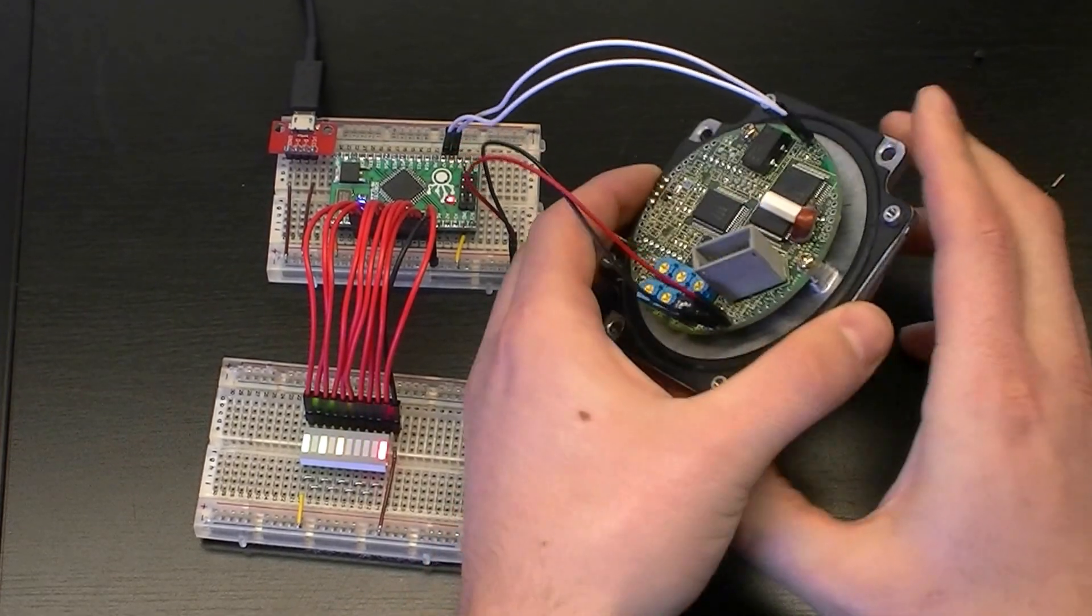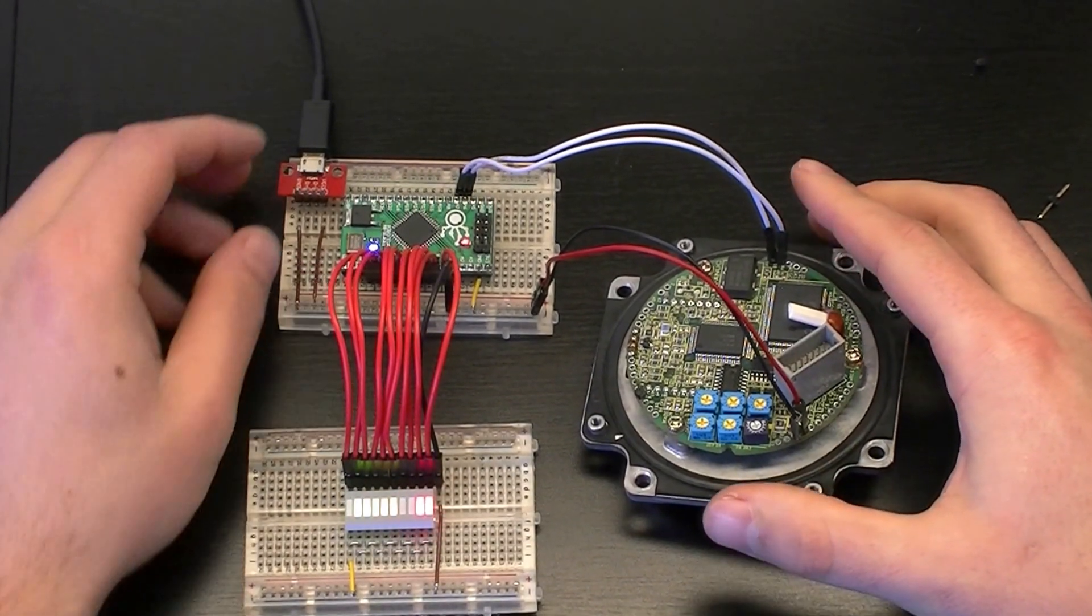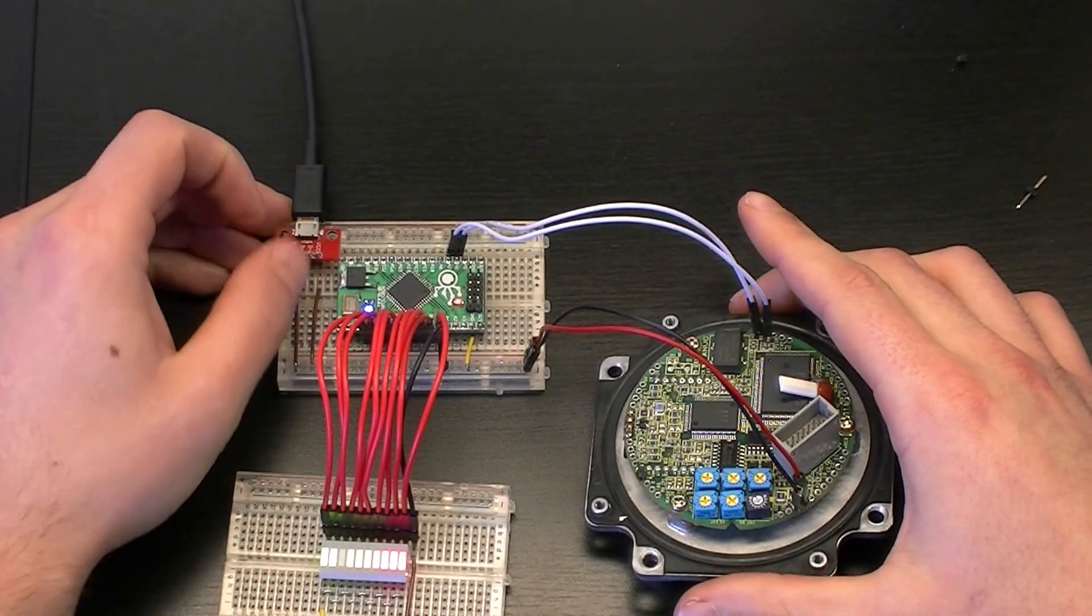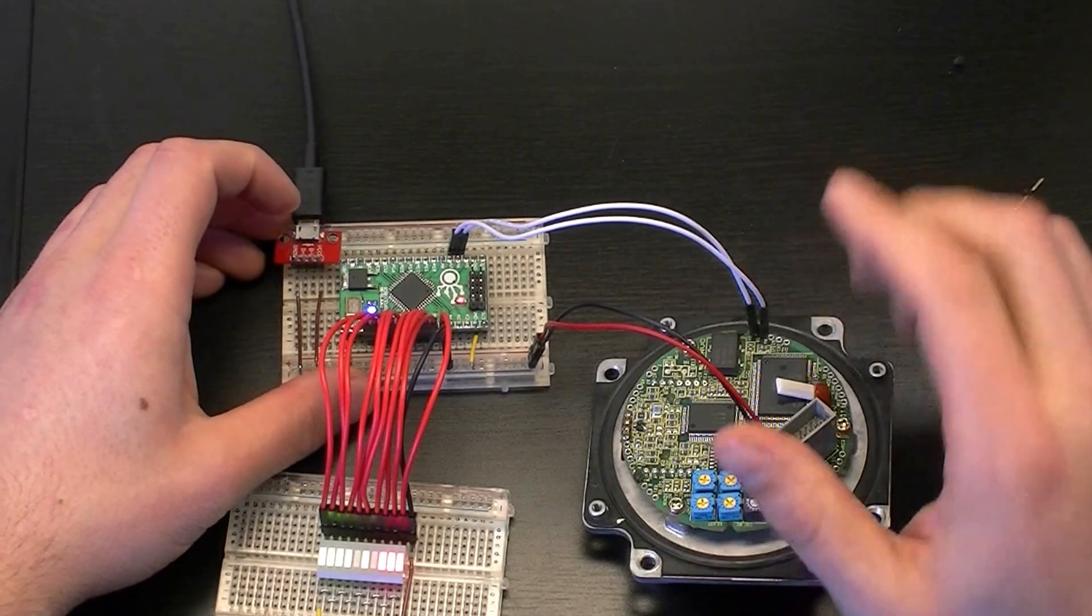And you can see how fast we're counting. Now how we're decoding this is with this chip here. Now this is an FPGA, it's a logic circuit. Now the reason that we're using this and not a standard microprocessor is because it will never lose its step count.